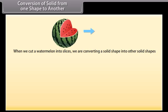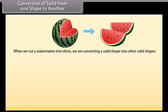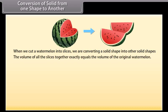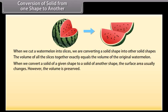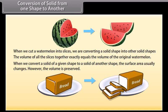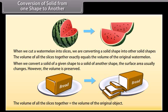When we cut a watermelon into slices, we are converting a solid shape into other solid shapes. Regardless of the size and shape of the slices, there is one fact that holds true: the volume of all the slices together exactly equals the volume of the original watermelon. When we convert a solid of a given shape to another shape, the surface area usually changes; however, the volume is preserved. Similarly, when cutting bread into slices, the total volume of slices equals the volume of the original.